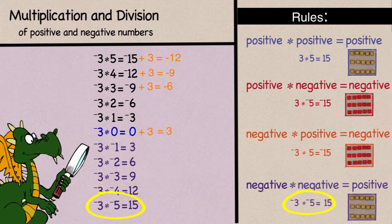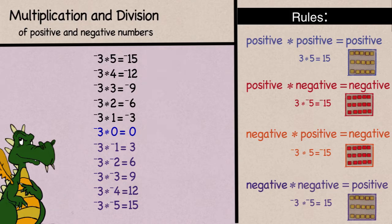In fact, whenever we multiply two negative numbers, the product is going to be positive. Okay, we've now looked at the rules for multiplication. What about division?